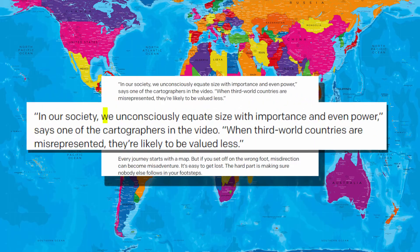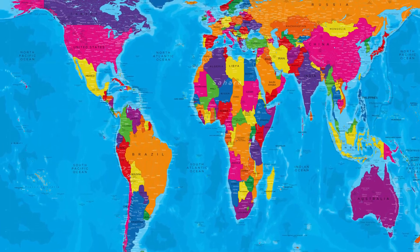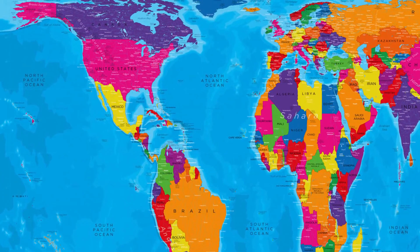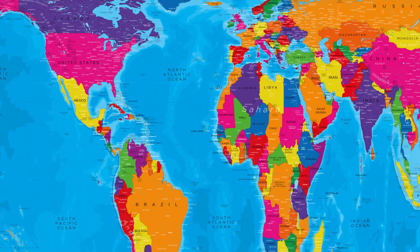But does it? As a school director in Boston said, unconsciously we might equate size with importance. Despite this, in my opinion, that's not a reason to widespread the use of the Gall-Peters projection, because it's too hard to learn from it.